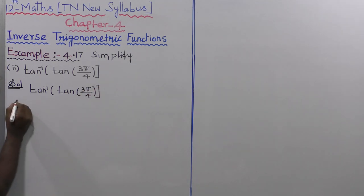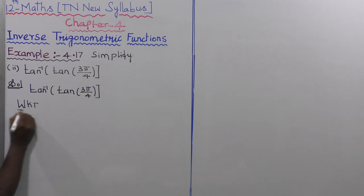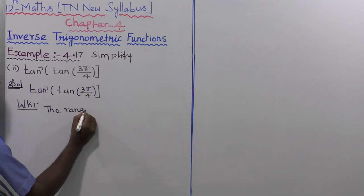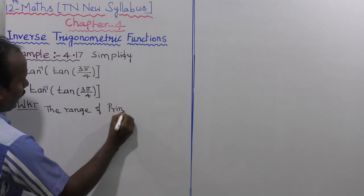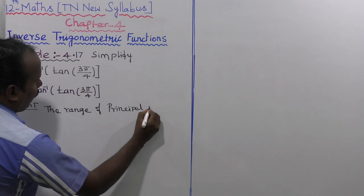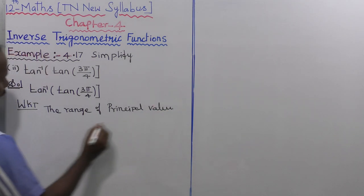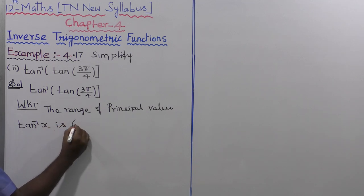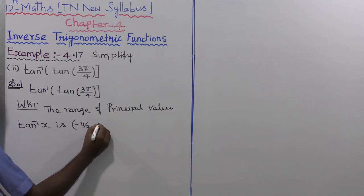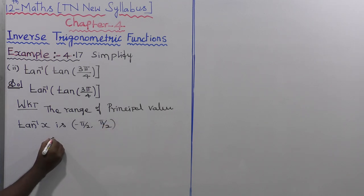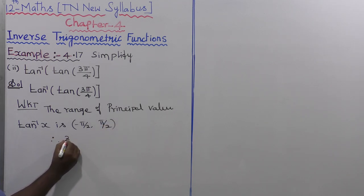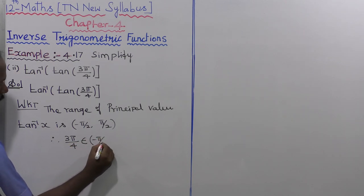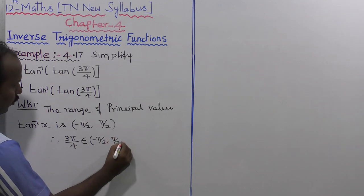We know that the range of the principle value of tan inverse of x is the open interval minus π/2 to plus π/2. Therefore, 3π/4 does not belong to the interval minus π/2 to plus π/2.